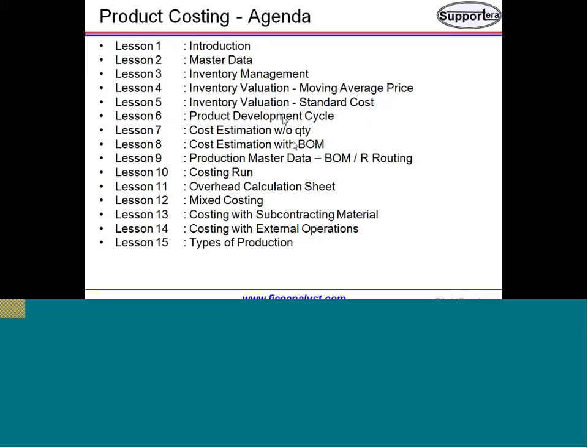We will look at bill of materials and routings as part of master data and how they impact your overall cost estimation. Then we will use the automation tool called costing run — similar to a payment run — which helps you run standard costing for a large number of materials across a wide number of plants, covering multiple standard cost levels.